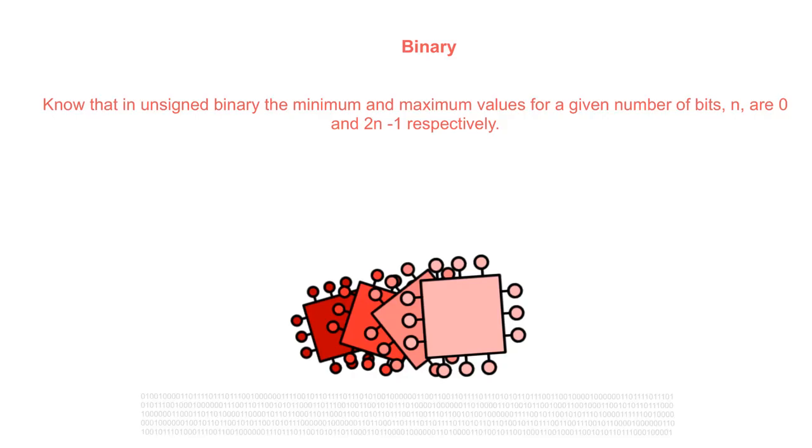By the end of this video you will know that in unsigned binary the minimum and maximum values for a given number of bits n are zero and 2^n minus one respectively.